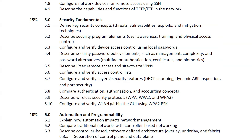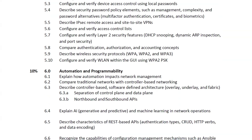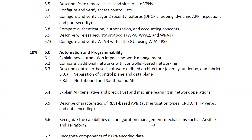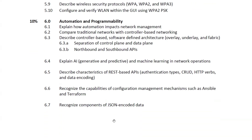The automation and programmability module covers how automation impacts network management and compares traditional networks with controller-based networks. You'll study SDN architecture and how AI and machine learning — including generative AI and predictive AI — can be used in networking. REST-based APIs and their operations including CRUD operations, HTTP verbs, and data encoding are covered, along with configuration management tools like Ansible and Terraform, and interpreting JSON-encoded data.